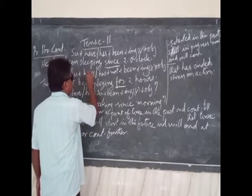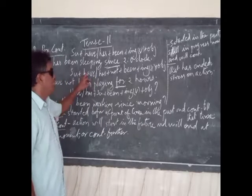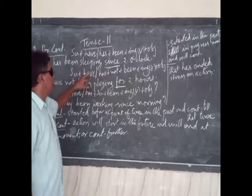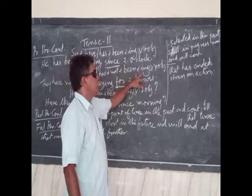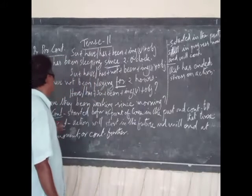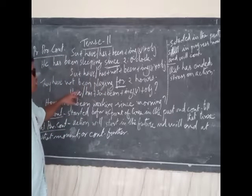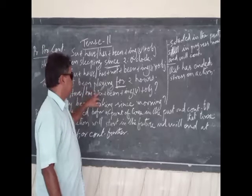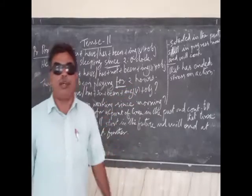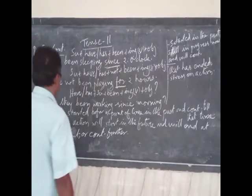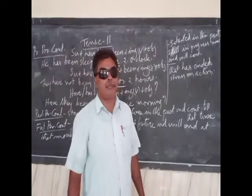For negatives, the structure is: subject plus have or has plus not plus been plus ING verb plus object. With third person singular we use 'has'; with any other person we use 'have.' For example: they are not reaching you. The question form is: have or has plus subject plus been plus ING verb plus object. For example: they have been working since morning.